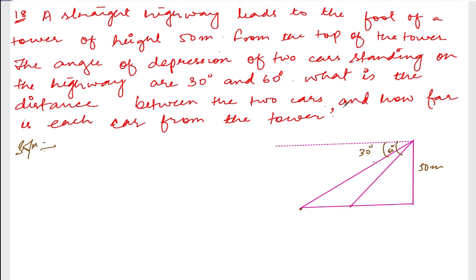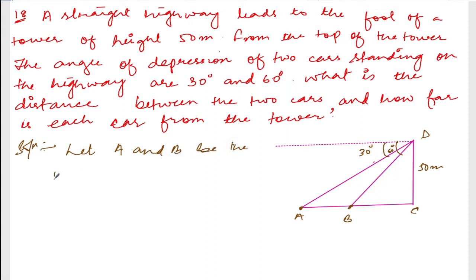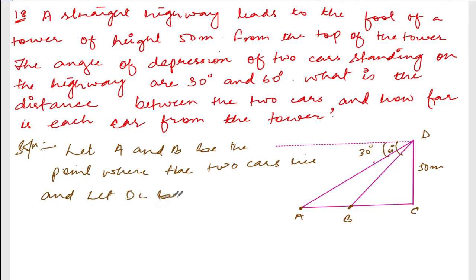We need to find the distance between the two cars. Let's say points A, B, C, D. Let A and B be the points where the two cars lie, and let DC be the height of the tower. We know the angles — if this is 60 then this one will be 60, and if this is 30 then this angle will be 30.